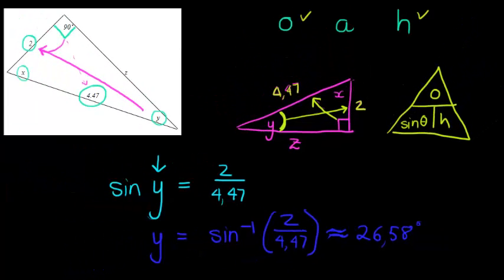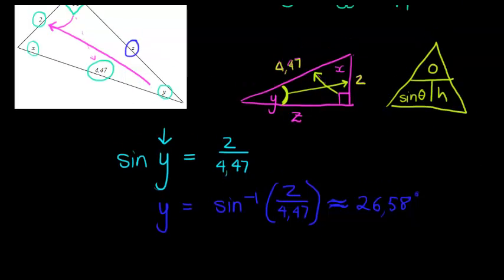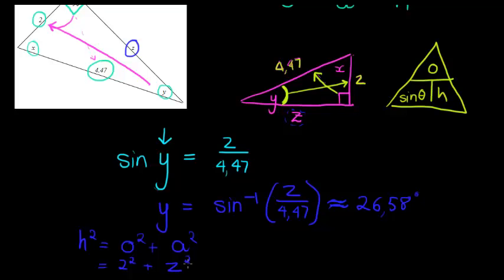And now to find the other side. So, to find z, I see that z is the side of, is one of the sides here, so I can use Pythagoras. And Pythagoras would say, my hypotenuse squared is equal to my opposite squared plus my adjacent squared. I get my opposite, in this case, opposite is 2 squared. My adjacent squared is z squared, that's what I'm trying to calculate, and my hypotenuse is 4.47 squared.